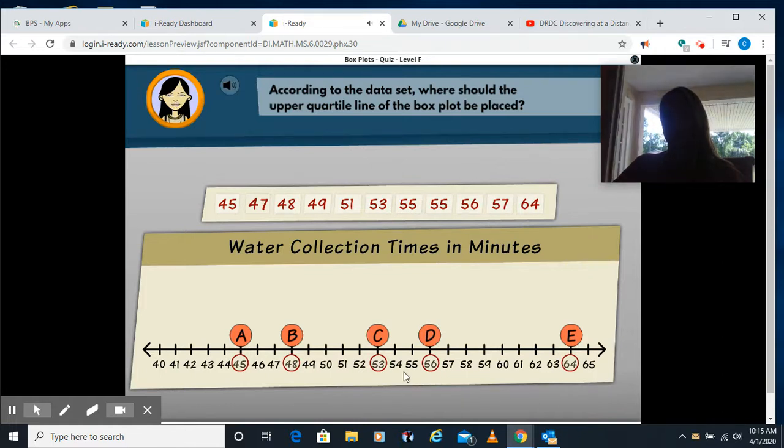Same thing with the upper quartile. We know this is our median at 53, this is our lower quartile to the left, our upper quartile is to the right, so it's going to be the median of the upper quartile or where the middle of the upper quartile is, which is going to be 56.